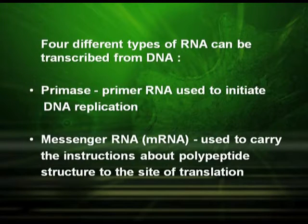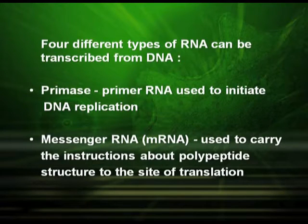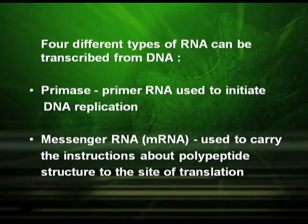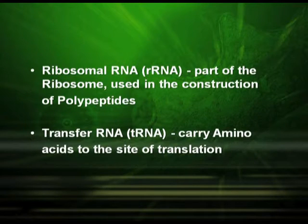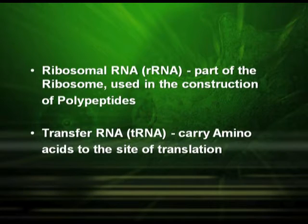Let us quickly revise the four different types of RNA transcribed from DNA. Besides messenger RNA, ribosomal RNA, and transfer RNA, we have another one — primer RNA — which you studied in DNA replication, used to initiate DNA replication. Messenger RNA carries instructions about polypeptide structure to the site of translation. Ribosomal RNA is part of the ribosome used in the construction of polypeptides, and transfer RNA carries amino acids to the site of translation.